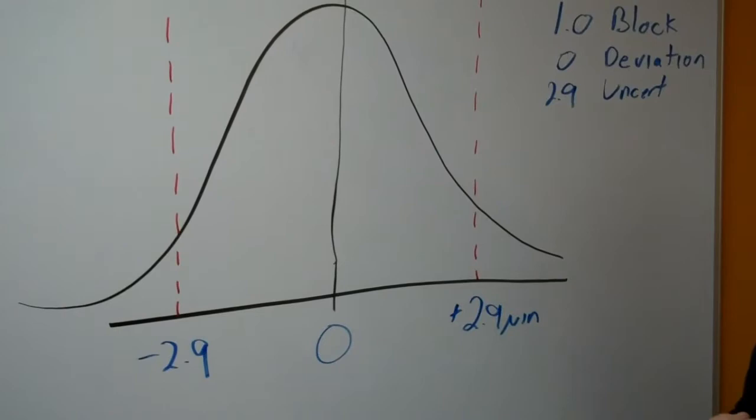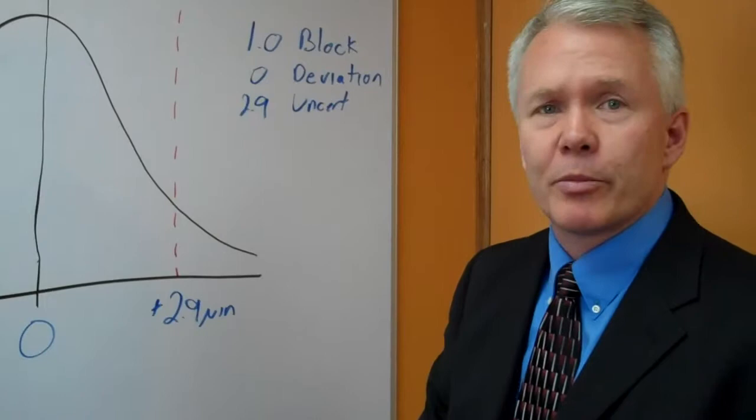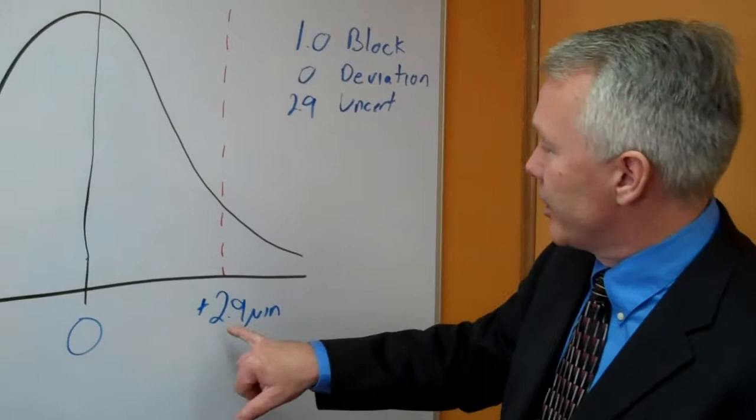We're saying it's kind of a standard deviation calculation built into the formula, and we look at the standard deviation of our whole process, which takes a lot of things into error, such as temperature, operator, machine, repeatability, stability, to determine how we get this 2.9 in the first place.